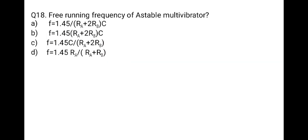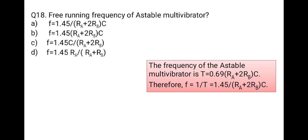The next question: what is the free-running frequency of an astable multivibrator? The time period of an astable multivibrator is T = 0.69 × (RA + 2RB) × C. After calculation, the frequency of an astable multivibrator is f = 1.45 / ((RA + 2RB) × C). Correct option is A.